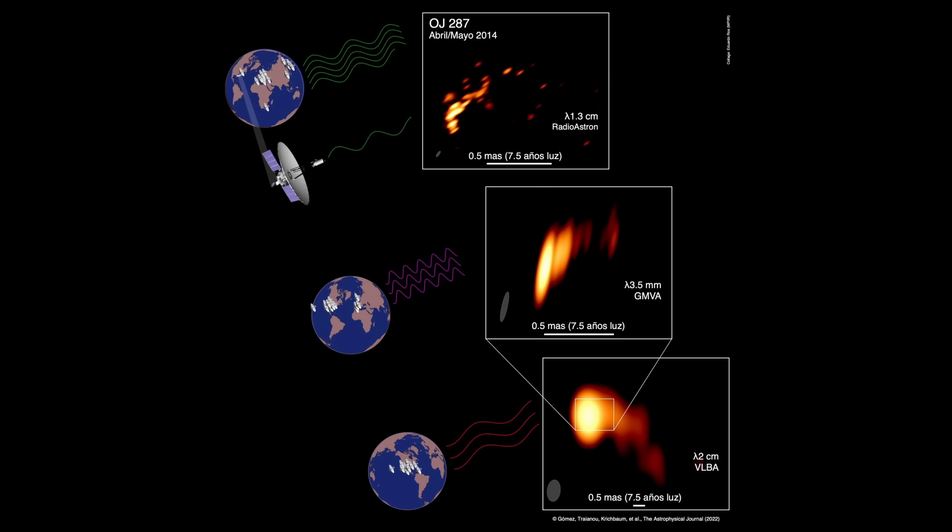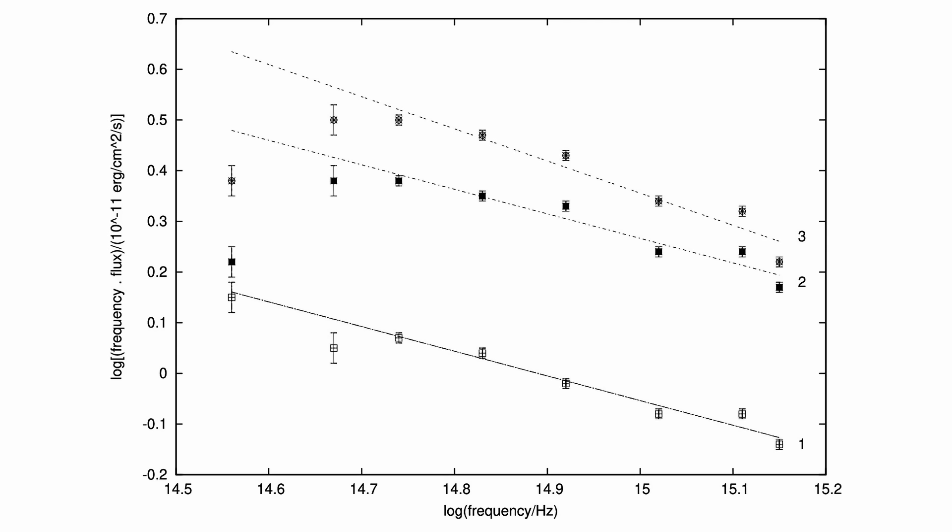The researchers utilized a combination of data from various observatories and telescopes to capture the event across multiple wavelengths, providing a comprehensive view of the flare's characteristics. The team observed an intense optical flare, which they then meticulously tracked to understand its evolution and peak brightness.